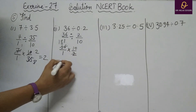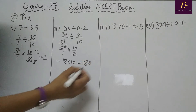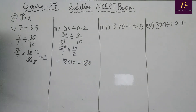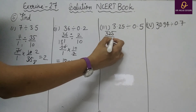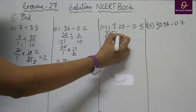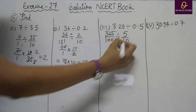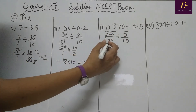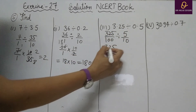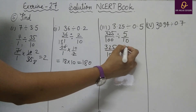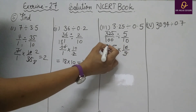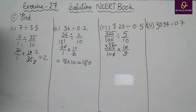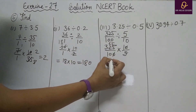Part C: 3.25 divided by 0.5. Remove decimal: 325 divided by 100, divided by 5 by 10. Divide changes to multiply and reciprocal of 5 by 10 is 10 by 5. Cancel 5 with 325 (325÷5=65), and 0 with 0. Result: 65 by 10. Divide directly: 65 by 10 equals 6.5.